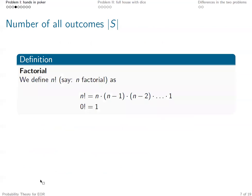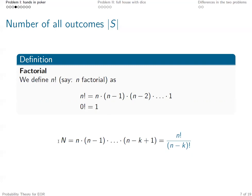There is a shorter way of writing this once we introduce factorial. We define the factorial function, which maps non-negative integers to another integer by this formula. It maps zero to one, and for positive integers it maps N to N times N minus one, continuing down to one. That is called N factorial. For example, three factorial equals six, which is three times two times one. With this factorial, we can write the number of ordered outcomes as N factorial divided by N minus K factorial.